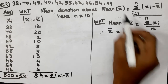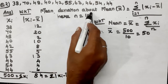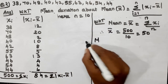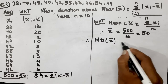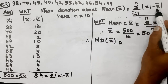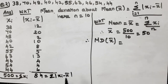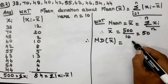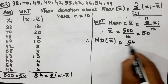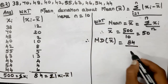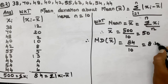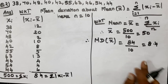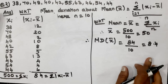Therefore, mean deviation about mean equals summation of |x_i - x_bar| divided by n, which is 84 divided by 10. So 84 divided by 10 equals 8.4. This is the answer for question number 2.